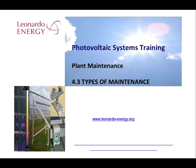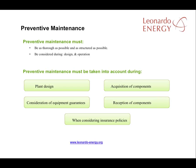Preventive maintenance is the most important type of maintenance because it seeks to avoid costly incidents at a later stage. Planning for preventive maintenance starts at the design stage, continues through acquisition of components and plant construction, and preventive maintenance needs to be taken into account when drawing up the plant's insurance policies.